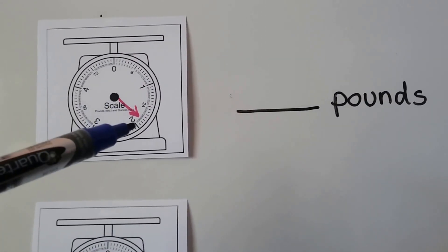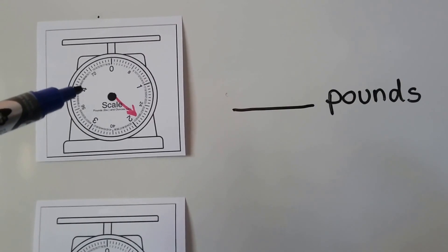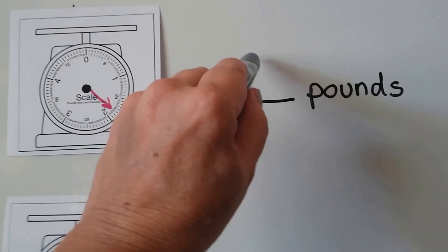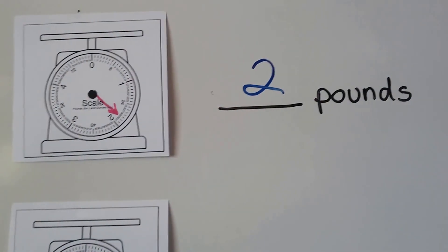So about how many pounds is that? This is one pound, two pounds, three pounds, four pounds. We can see the dial is about two pounds. It's pointing to about two pounds.